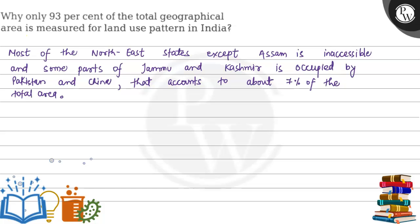Let's see this question. This question is: why is only 93% of the total geographical area measured for the land use pattern in India? So, children, this question is asking us why the 93% land area figure is used.